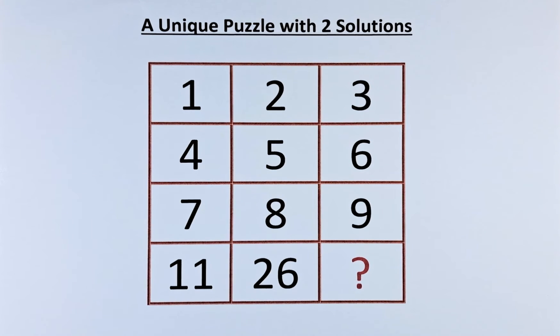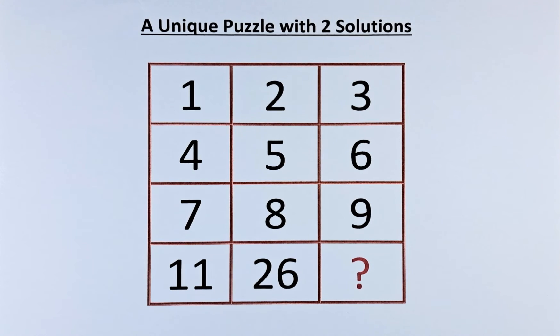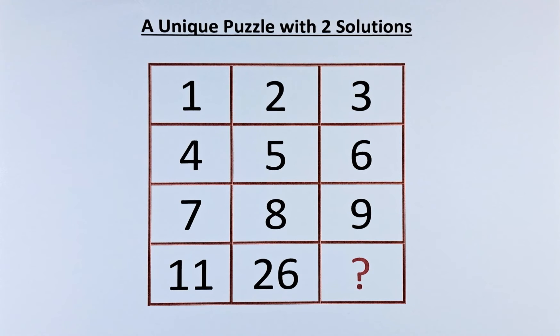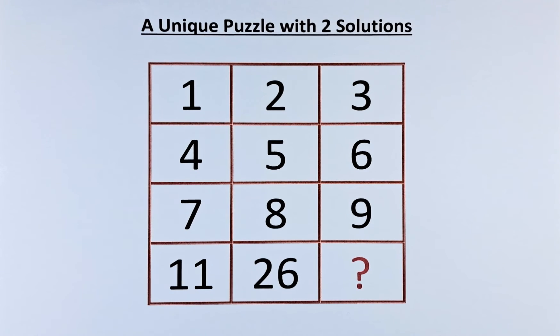Welcome back to this unique puzzle with two solutions. The numbers in the first rows are 1, 2, 3, second row 4, 5, 6, third row 7, 8, 9, and in the final row 11, 26, and the question mark. As I said before, there are two solutions to this puzzle.